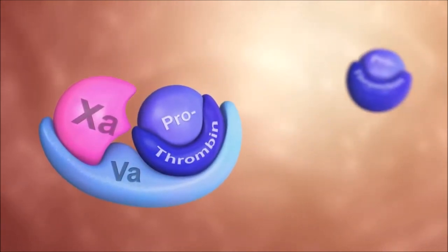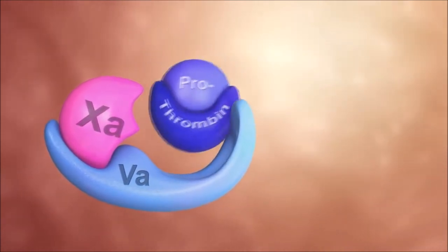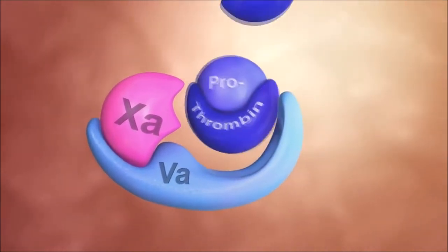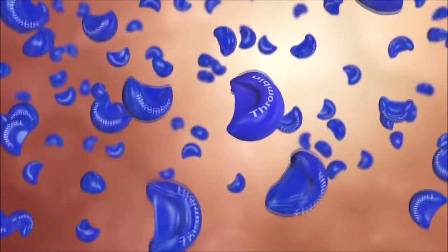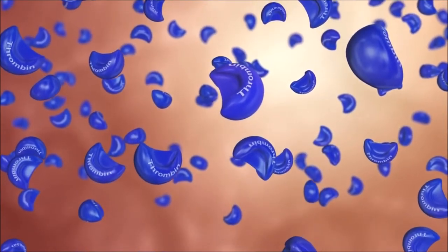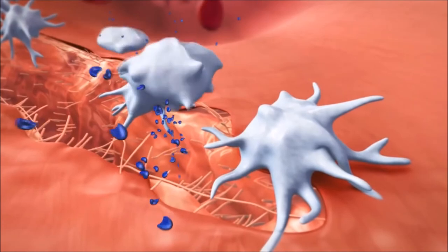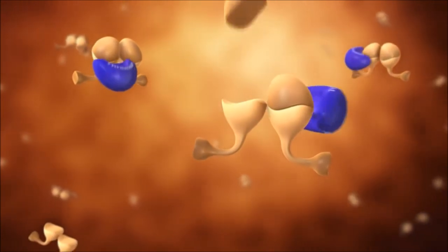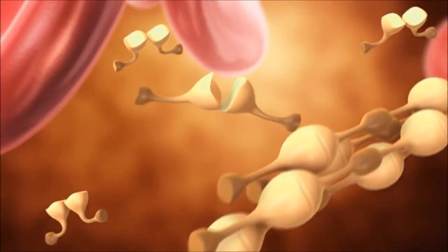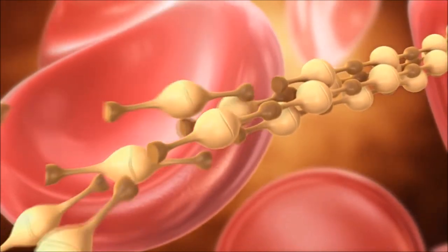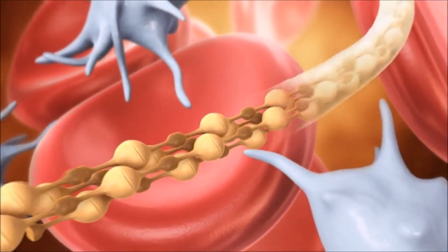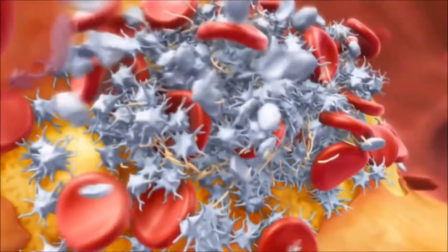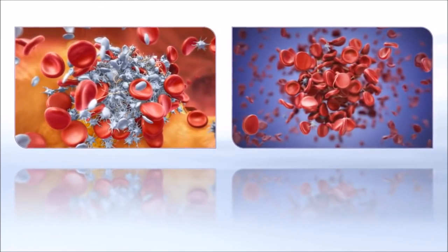Further down the cascade, factor 10a in combination with factor 5a activates thrombin. One molecule of factor 10a can catalyze the formation of a thousand molecules of thrombin. These large amounts of thrombin cause further activation of platelets and enhanced formation of fibrin. Fibrin then forms strands, making up the mesh that stabilizes the platelet plug in an arterial clot and holds together the RBCs in a venous clot.